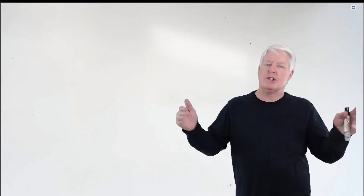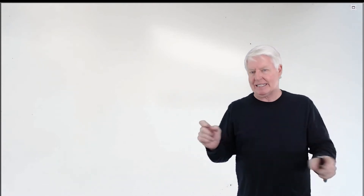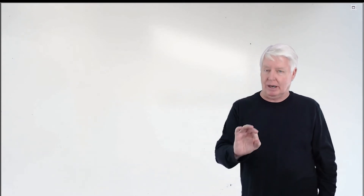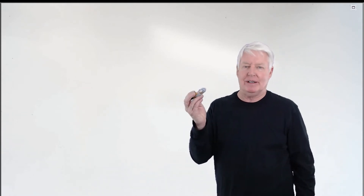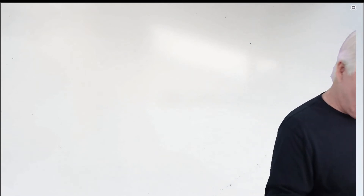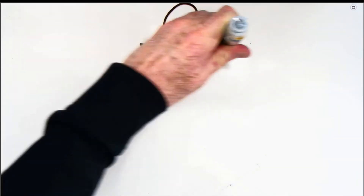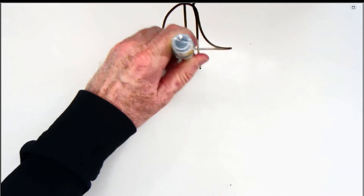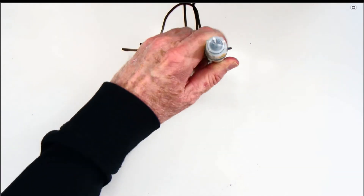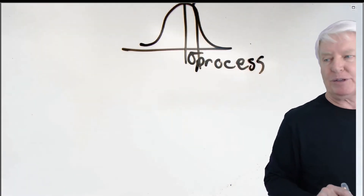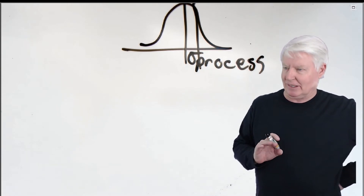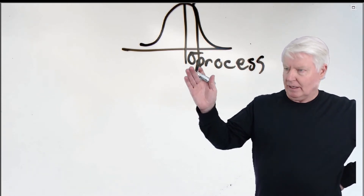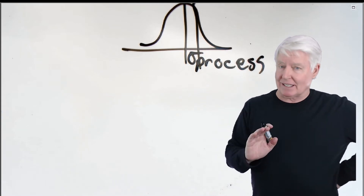You take the majority of the distribution, which we call the spread, and you divide it into six equal lengths — that's a sigma. Now we're going to find sigma of the process. Let's say I'm making this pen and I'm measuring the diameter. It ends up with this distribution, and here is what we call sigma of the process. There's going to be a lot of sigma talk going on here and it's easy to get mixed up, but sigma of the process really consists of two things.